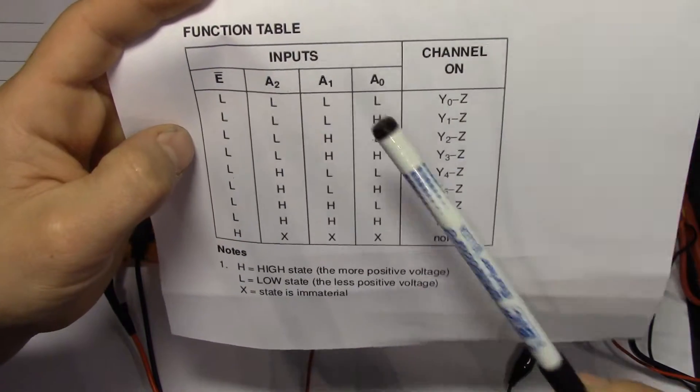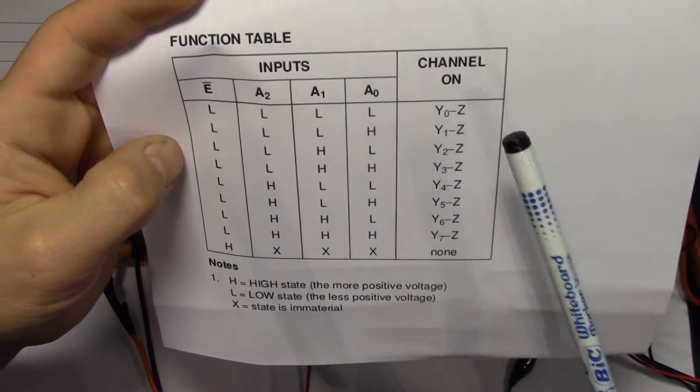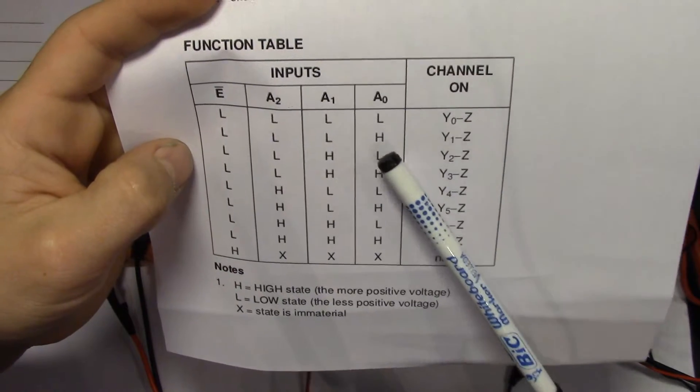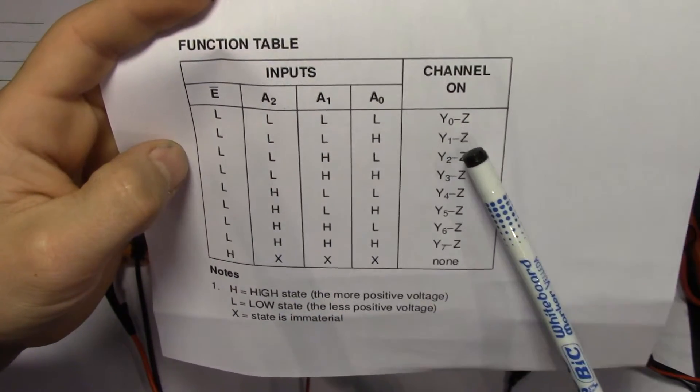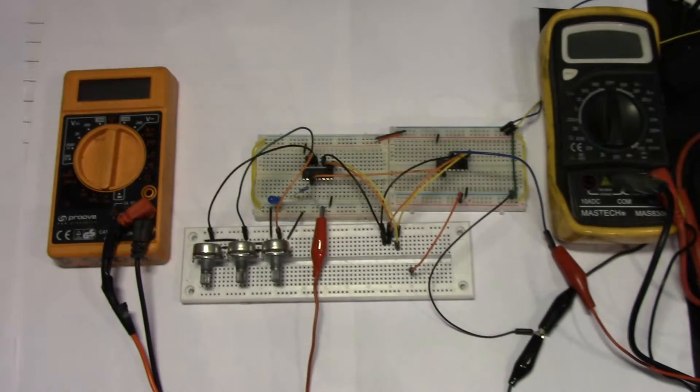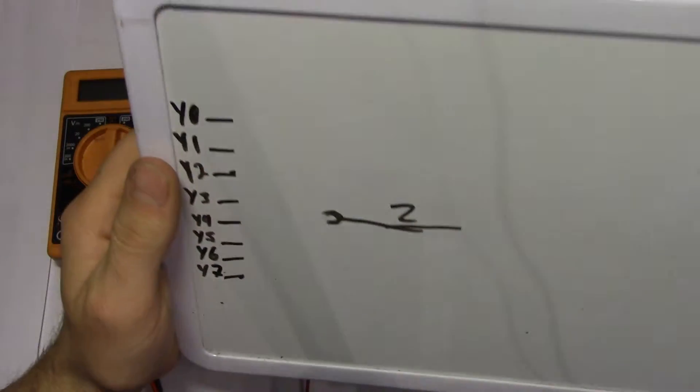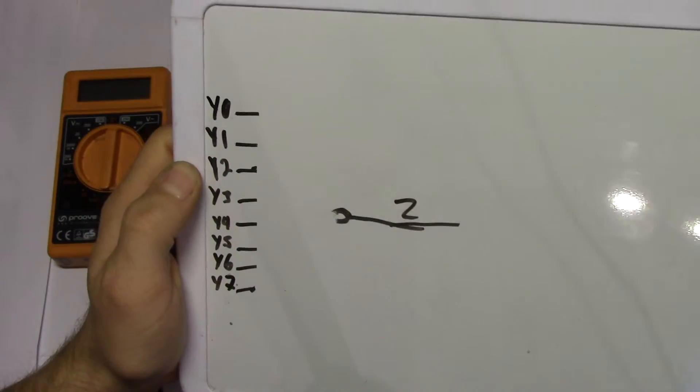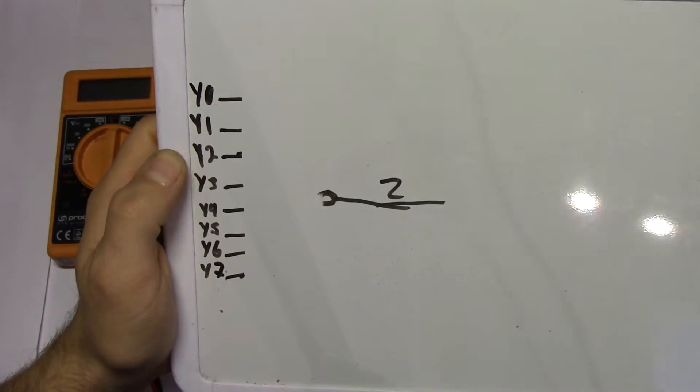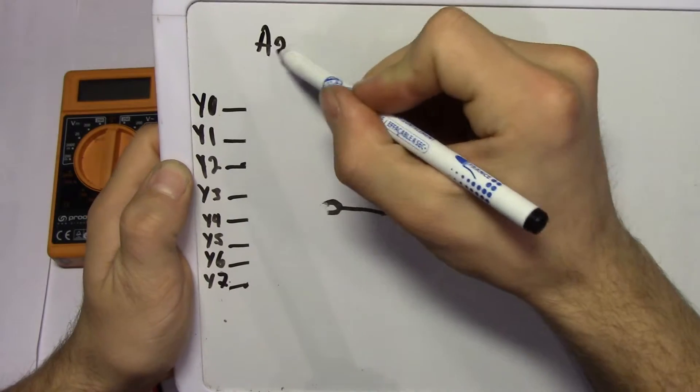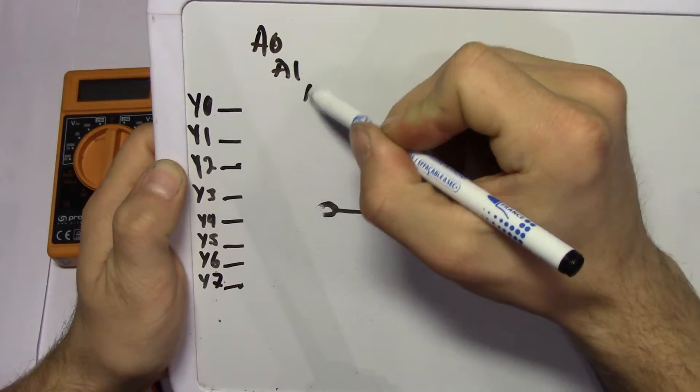If all of these pins are low, Y0 is connected to set. And if A0 is high, Y1 is connected to set. So it's much like one of those rotary knobs that you've all seen. Eight different inputs based on A0, A1 and A2.